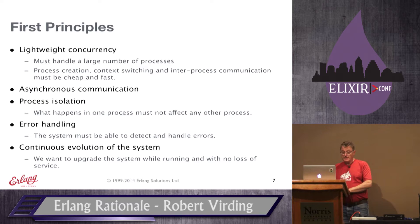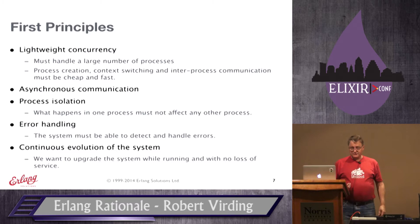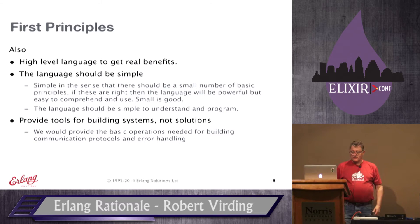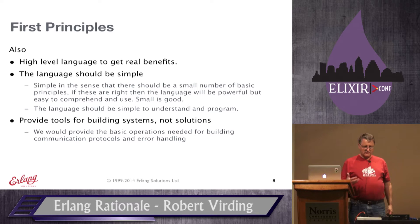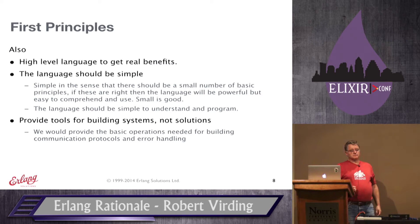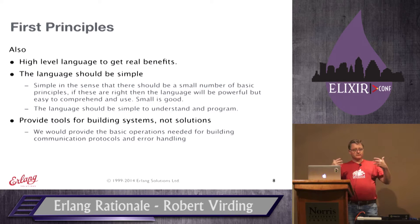Process isolation: what happens in one process must not directly or indirectly affect what happens in another. The system must be able to detect and handle errors — that was not optional. Continuous evolution of the system, meaning the ability to upgrade code while the system was running. We also needed a higher-level language — compared to C, Pascal, and Ada — and the language should be simple, with a small number of basic principles that let you build everything on top.